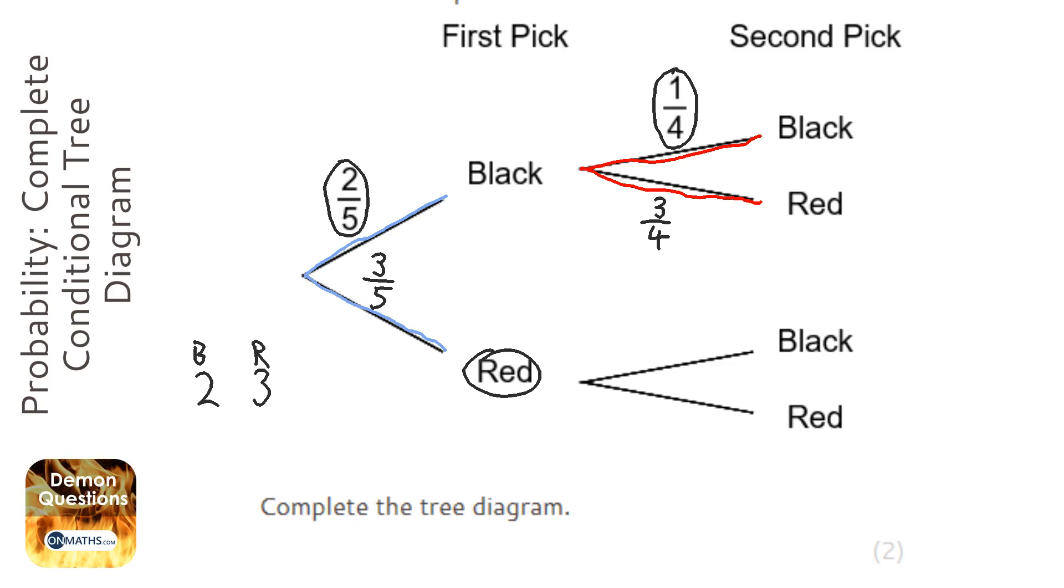So there's only two reds left and in total there are only four counters left. Well that's the same as a half. And we have the remaining two blacks that we started with and we only have four counters left, so again that's two over four, so that would be a half.